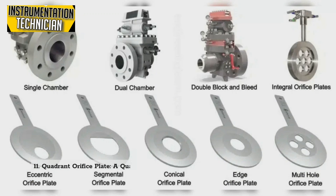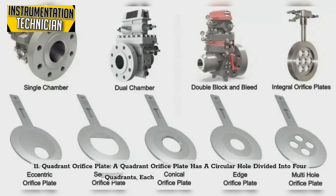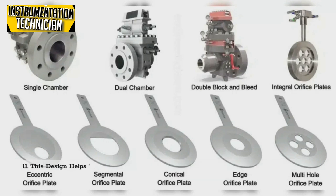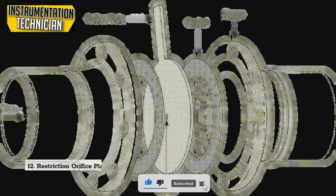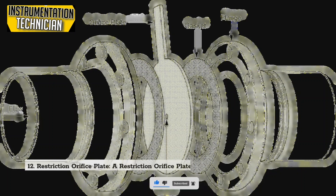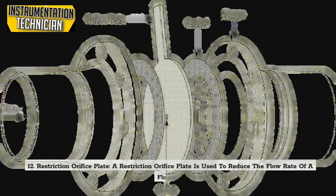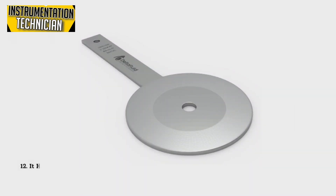11. Quadrant orifice plate — a quadrant orifice plate has a circular hole divided into four quadrants, each with a different radius. This design helps to reduce the permanent pressure loss and provides better measurement accuracy. 12. Restriction orifice plate — a restriction orifice plate is used to reduce the flow rate of a fluid. It has a smaller orifice than a standard orifice plate and creates a more significant pressure drop.